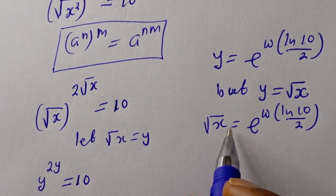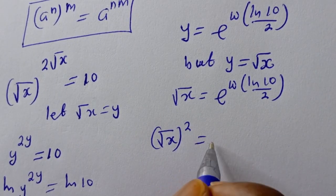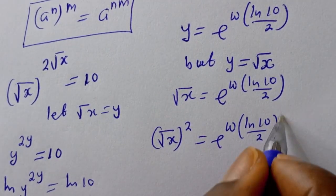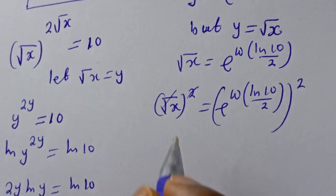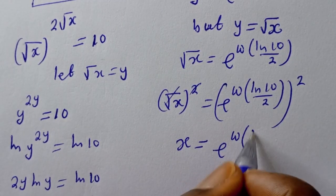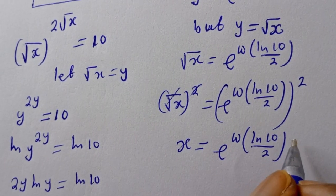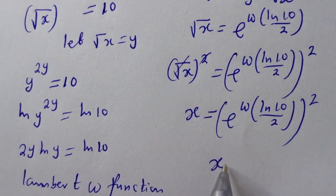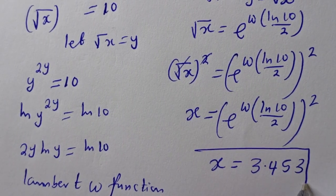Now let's square both sides of this equation. We have square root of s squared is equal to e to the power of W bracket ln of 10 over 2, all squared. Now if you press your calculator, s will be equal to 3.45. This is the final answer.